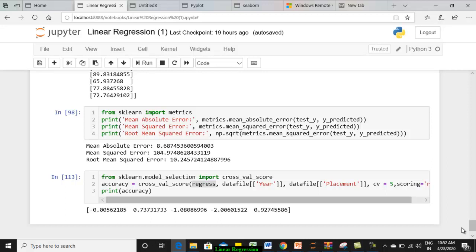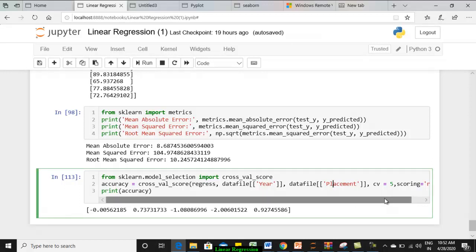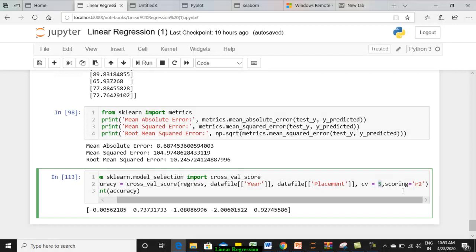So to that we are passing this as the first parameter between which of the columns that we need to perform. It is a simple linear regression. That is why cross fold, number of folds, how many you want to have? Five. What is the scoring mechanism? Like this cross validation supports multiple metrics like accuracy, confusion matrix, F1 score, so many other things. We are going to use R2 since it is a prediction algorithm.